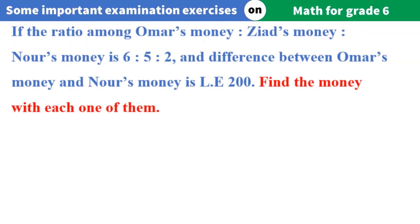If the ratio among Omar's money to Ziyad's money to Noor's money is 6 to 5 to 2, and the difference between Omar's money and Noor's money is 200 pounds, find the money with each one of them.